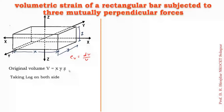Now we take the log on both sides of the volume equation. Since the right-hand side is a multiplication, taking log converts it to addition. So log V is equal to log x plus log y plus log z.